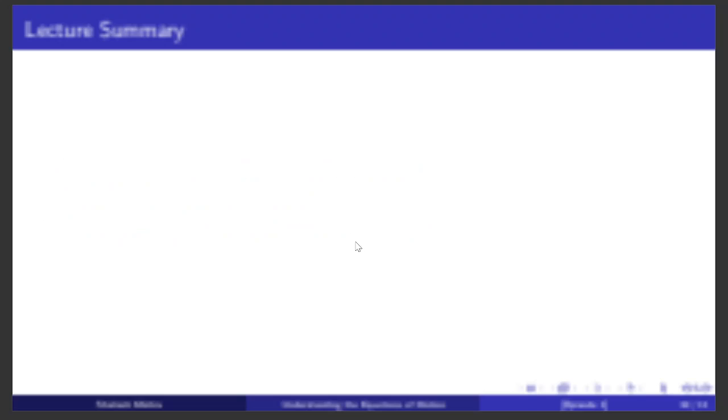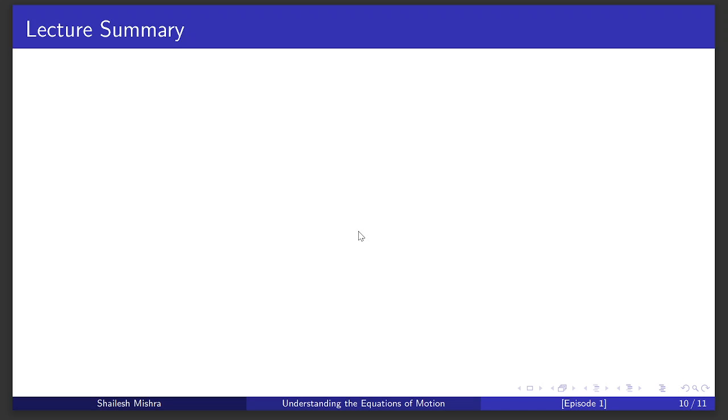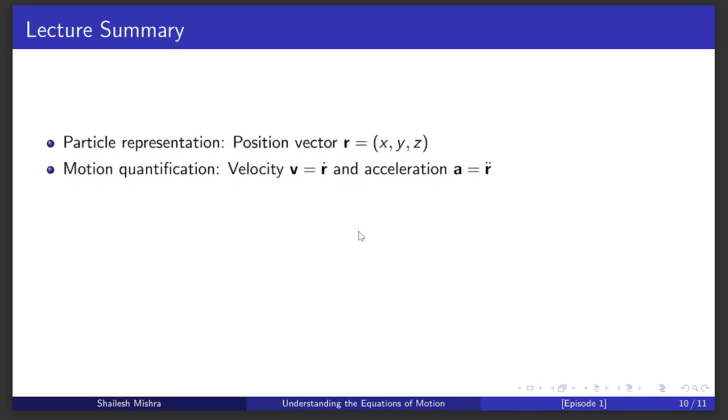Let's quickly recap with a focus on the math behind our physics discussion. We started with the concept of a particle, represented mathematically by its position vector r = (x, y, z). We explored how to quantify its motion through velocity v = ṙ and acceleration a = r̈, which are the first and second time derivatives of the position, respectively.